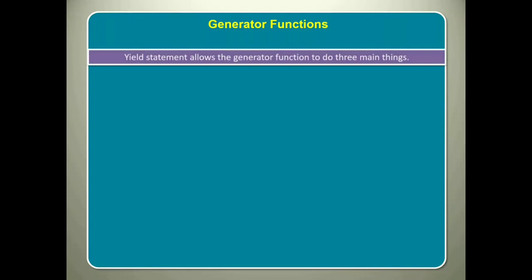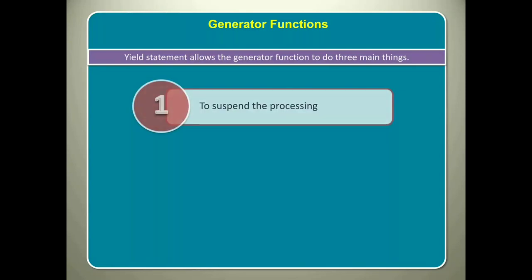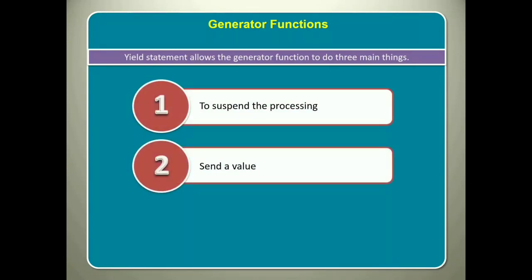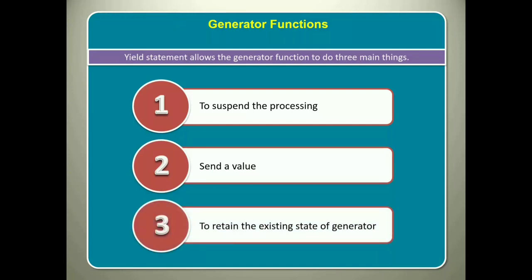Yield statement allows the generator function to do three main things: to suspend the processing, send a value and also to retain the existing state of generator.